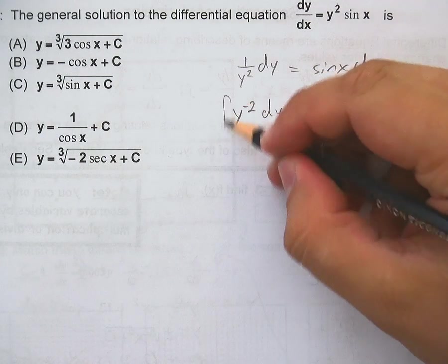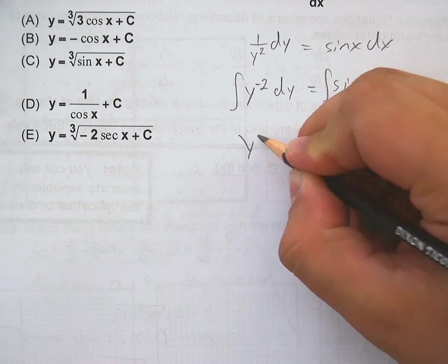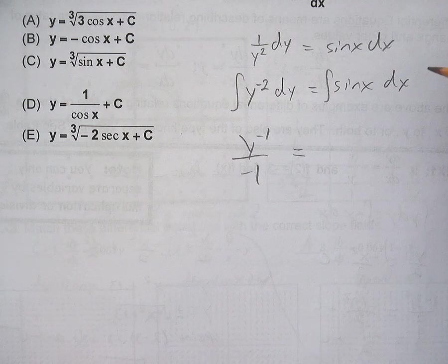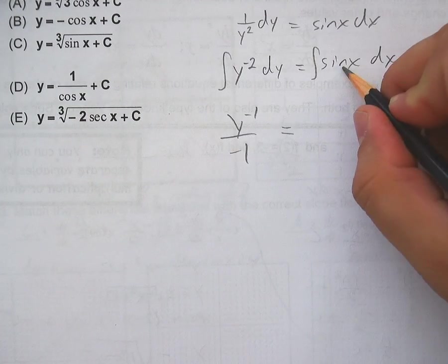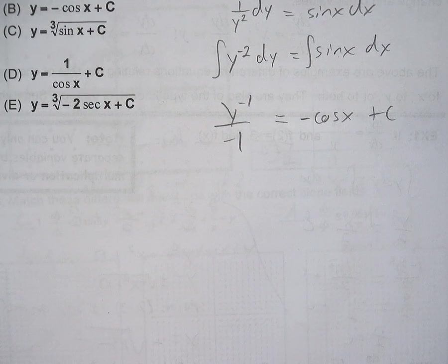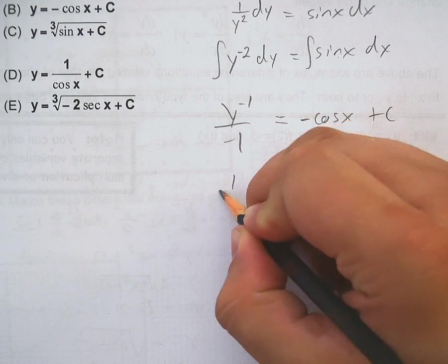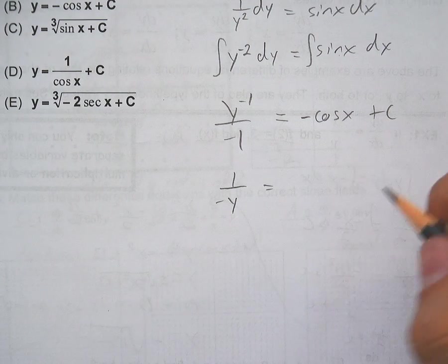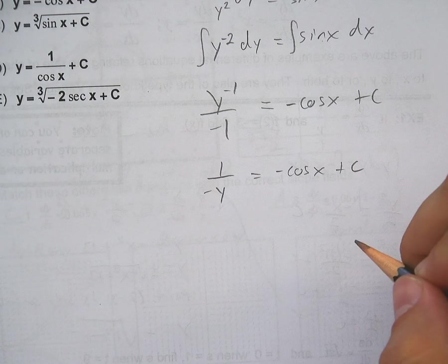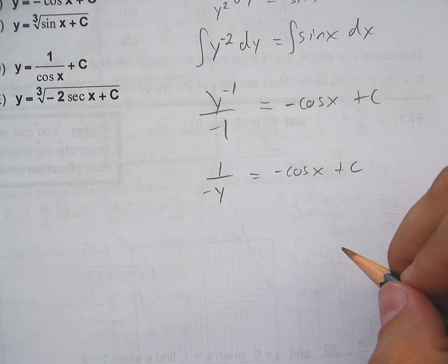And let's integrate that. So the integral of y^(-2) is y^(-1) over -1. Integral of sine is -cosine x. And we'll always add our plus c on the right. And I need to solve for y. So this is 1 over -y equals -cosine x plus c.